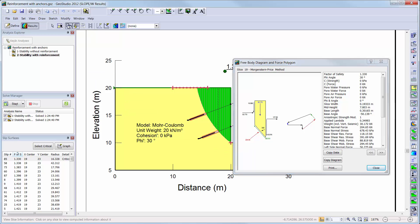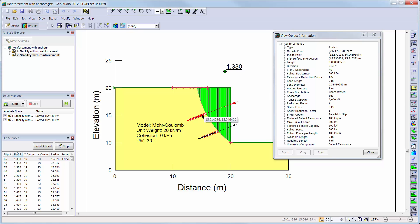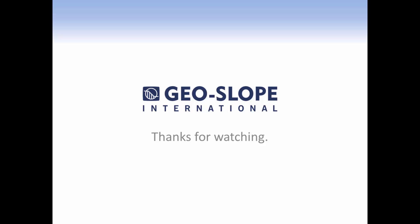More information can be seen by using the View Object Information command where the input parameters used, as well as the calculations for each individual anchor, are shown. We have now reached the end of this introductory tutorial. Note that not all of the powerful features of Slope W 2012 have been used or discussed here. Further information on each command can be found in the online help, supporting documentation for Slope W, as well as in other tutorial videos of the Getting Started and Engineering series with GeoStudio. Thank you for watching.